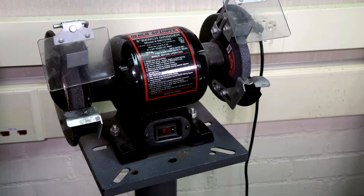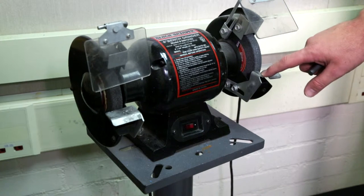Now let's identify some parts of the bench grinder: the coarse wheel, the fine wheel, the power switch, the safety shields, the work rest, the motor, and the angled groove.